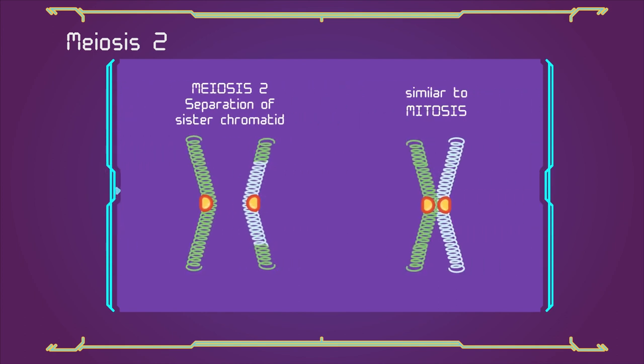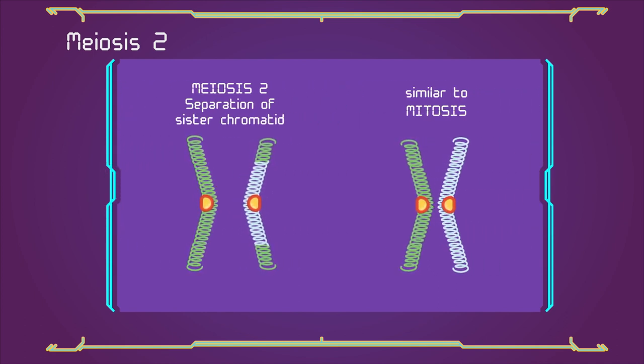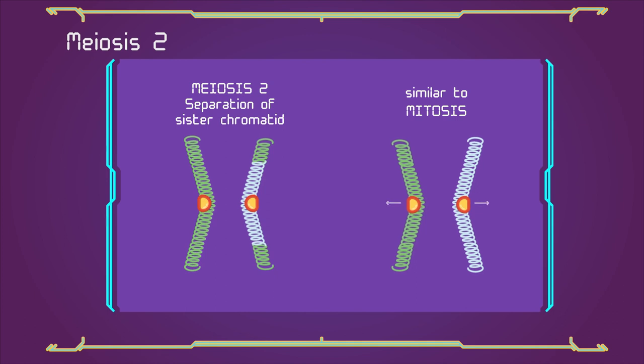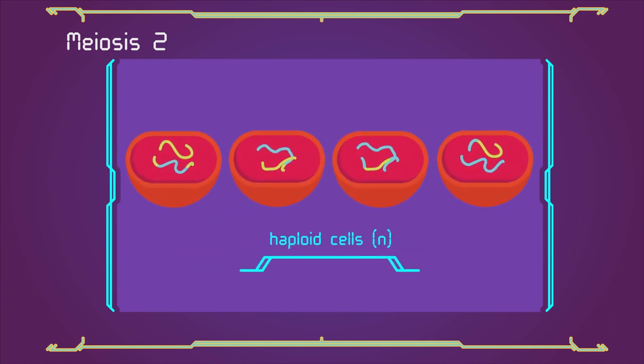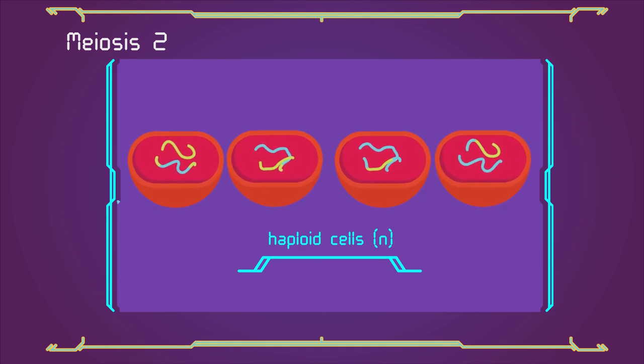Though its genetic results are fundamentally different. The end result of meiosis 2 is production of four haploid cells (n chromosomes, 23 in humans).